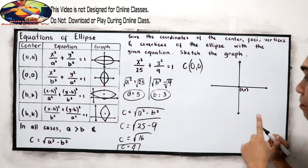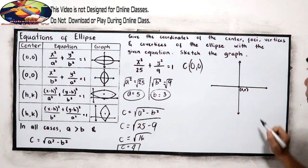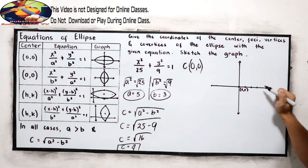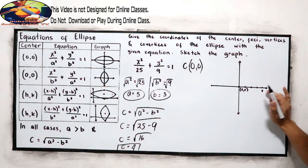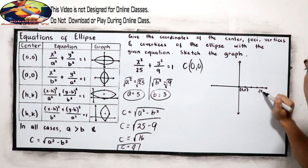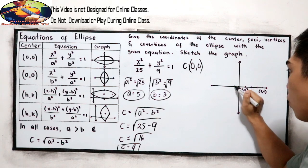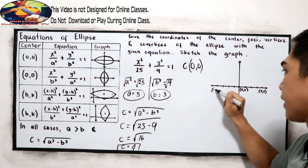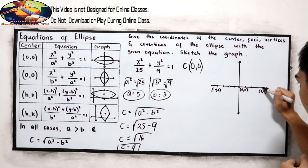From the center, we go 4 units to the right and 4 units to the left. So the foci coordinates are (4, 0) and (-4, 0). This will be our foci — F sub 1 and F sub 2.